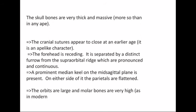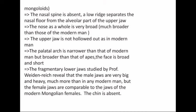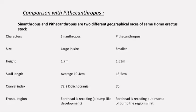The palate arc is narrower than that of modern men but broader than that of apes. Although Pithecanthropus and Sinanthropus belong to the same species of Homo erectus, they have some variation due to geographical factors.